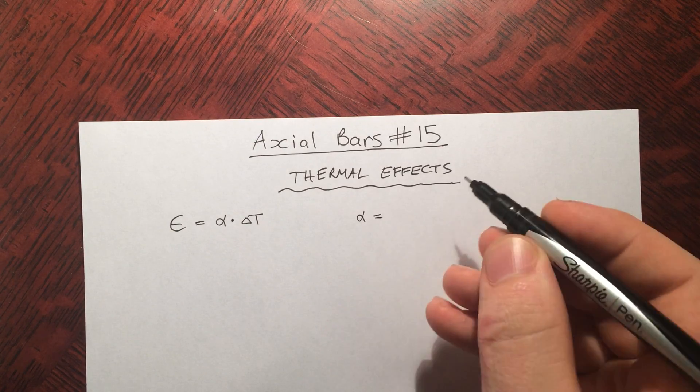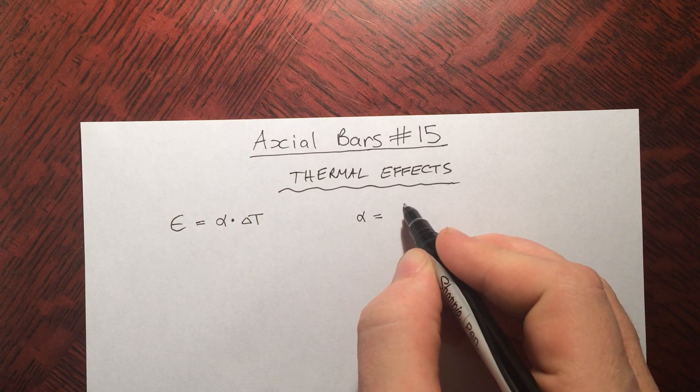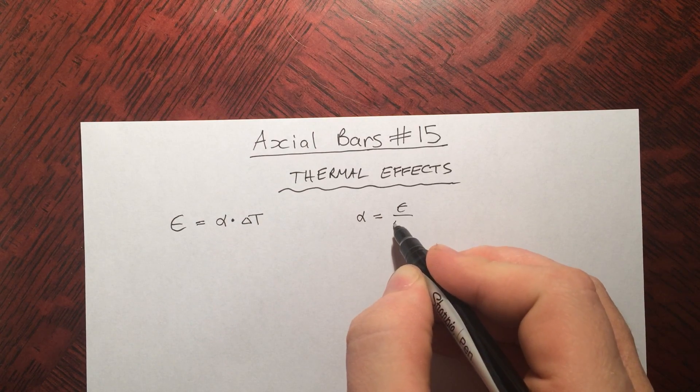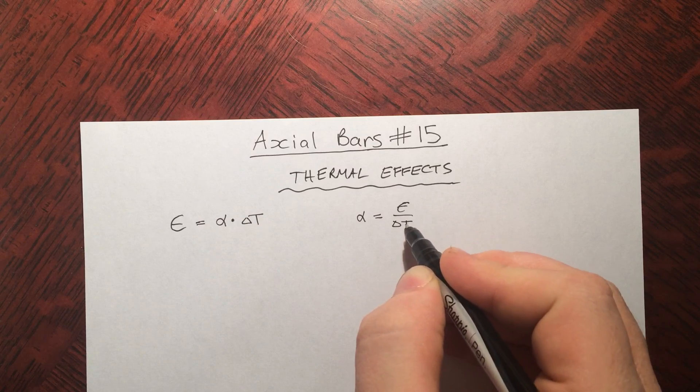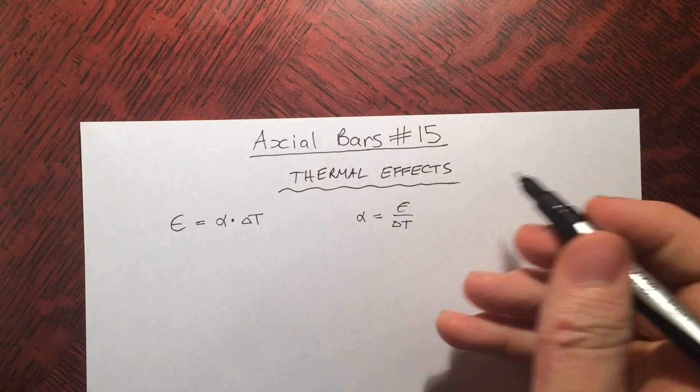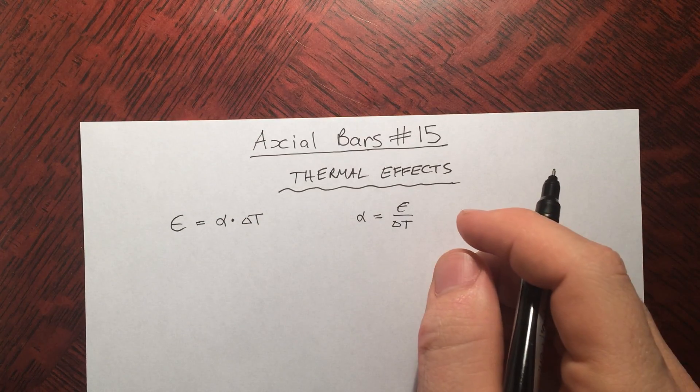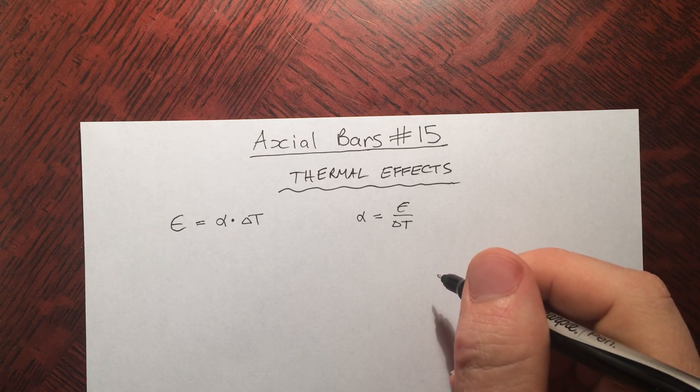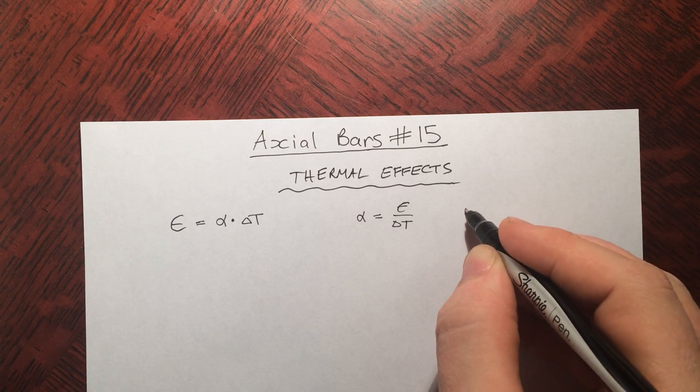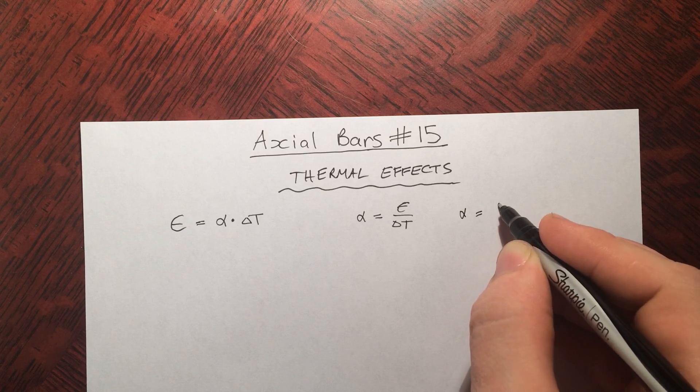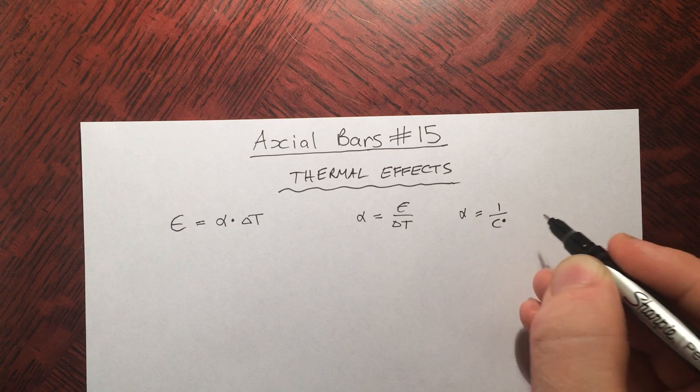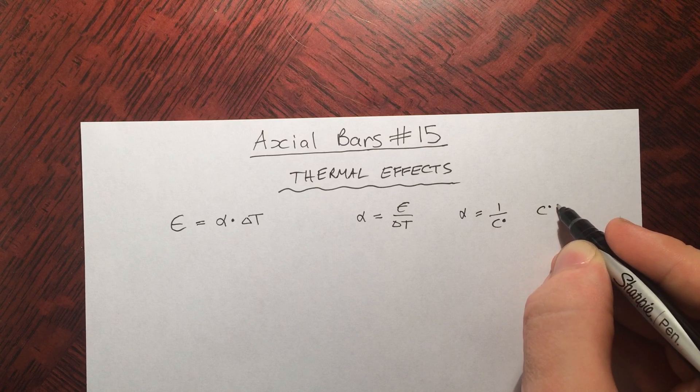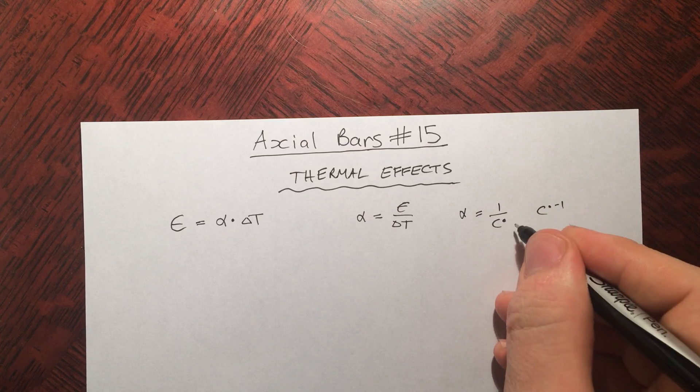Let's quickly find the units of this constant. So expressing it just as something by itself, it's strain over delta T. Remember, strain has no units. Delta T is degrees Celsius, degrees Fahrenheit, Kelvin. I just like to use degrees Celsius. So alpha is one over degrees Celsius, or Celsius to the negative one.